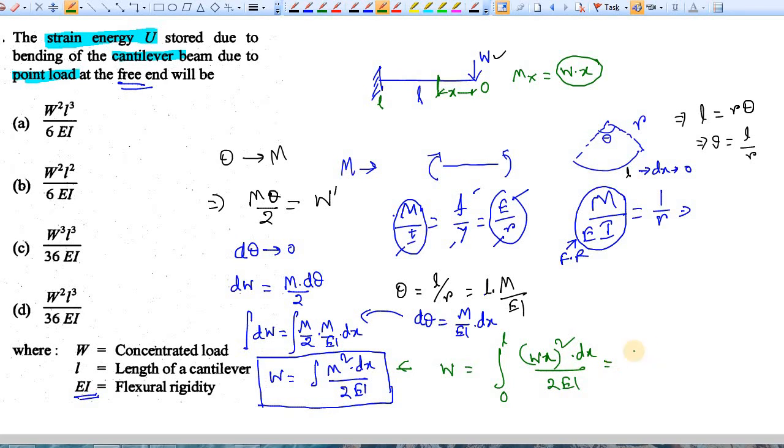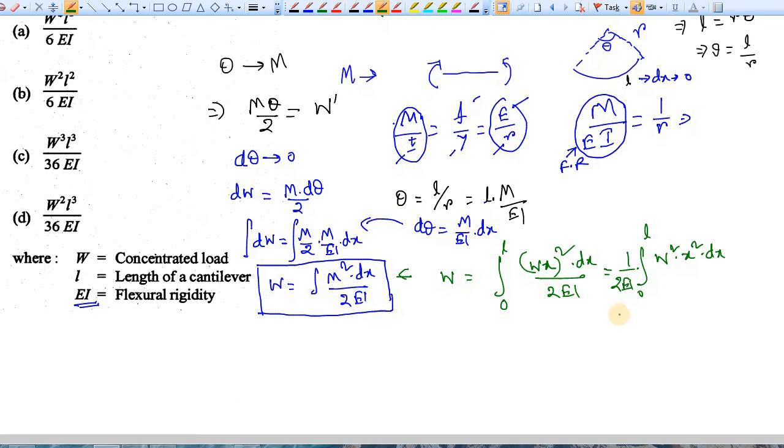If you integrate it, 0 to l divided by 2EI, this is constant. And this is coming as W squared times x squared dx. Integrate it: 1 by 2EI, and W squared x squared after integration becomes x cube by 3, and this varies from 0 to l.